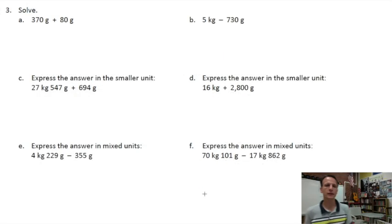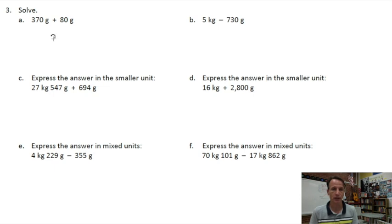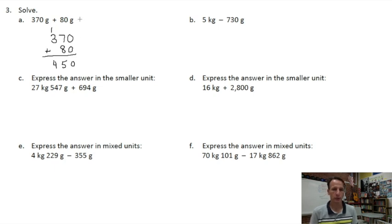Let's roll on. Number three will take a little while — we have six examples in three different ways, so breathe and be patient. Starting with part a: we're adding 370 grams to 80 grams. The most straightforward way is the standard algorithm — write it vertically instead of horizontally. 370 plus 80: zero and zero are zero; 7 and 8 are 15, place the 5 regroup the 1; 1 and 3 make 4. The answer is 450 grams.